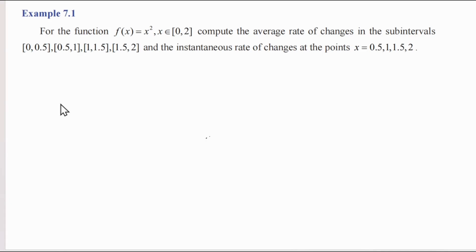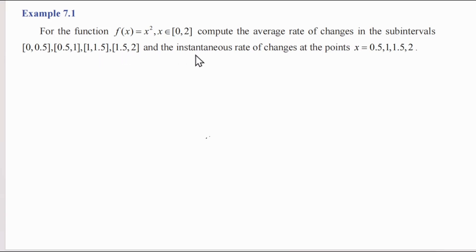Hello students, welcome to this video. In this video, Example 7.1: for the function f(x) = x², where x belongs to [0, 2], compute the average rate of change in the sub-intervals [0, 0.5], [0.5, 1], [1, 1.5], [1.5, 2], and the instantaneous rate of change at the points x = 0.5, 1, 1.5, 2.